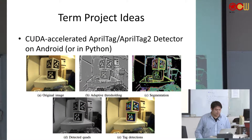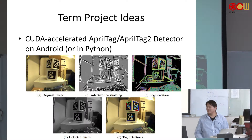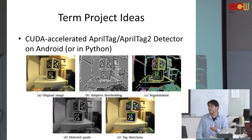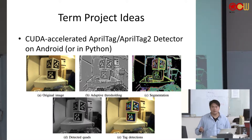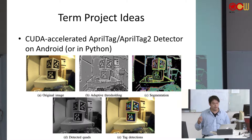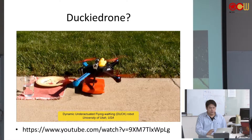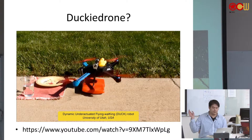CUDA-accelerated AprilTag or AprilTag 2 — last week we talked about the details of how the algorithm works inside AprilTag. One solution is that when you compute the gradients, you could use CUDA to accelerate AprilTag, achieving a higher frame rate or running it on Android or different platforms.